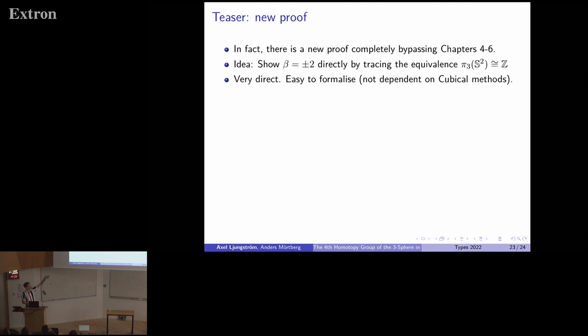You can actually just look at this term beta, try to trace a lot of maps. It's very annoying to look at, but it's not that hard. It's very direct and it's formalizable in standard HoTT 2. There's nothing cubical about this proof. We actually get a direct proof of this. And this proof gives you a lot of new definitions of beta on the way. We can actually look at what happens when we plug one of them into cubical Agda and we normalize. And in fact, this beta is actually minus two and not two.